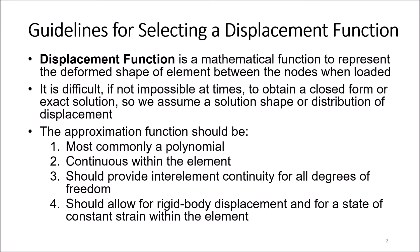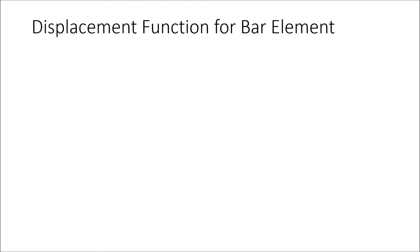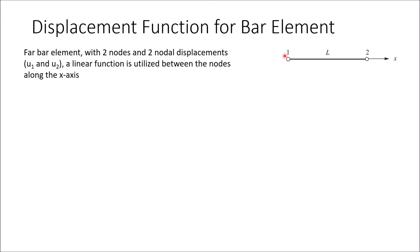We are going to apply these guidelines to derive a displacement function for the bar element that we just developed the stiffness matrix and stiffness equation for — the bar element or truss element. This bar element has a start node 1 and an end node 2, extends along the x-axis, and has a length L. This bar with 2 nodes has 2 degrees of freedom, or 2 nodal displacements: U1 and U2. At each node, we only have one nodal displacement.